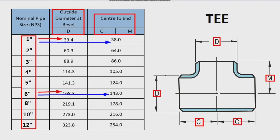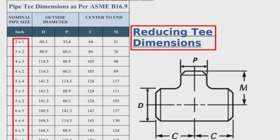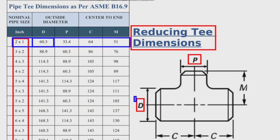Now let's look at the dimension chart for unequal or reducing tees. In this table, reducing tees are called 2x1, 3x2, 4x3, 4x2, 5x4, 5x3, 5x2, and so on. The first numbers — 2, 3, 4, 5 — represent the main outlets of the tee, and the second numbers — 1, 2, 3, 4 — represent the branch outlets. Unlike equal tees, reducing tees have 4 different sizes. For example, a 2x1 inch tee has two different outside diameters: the main side is 60.3 millimeters and the branch side is 33.4 millimeters. Reducing tees also have two types of center-to-end dimensions: C is 64 millimeters and M is 51 millimeters.